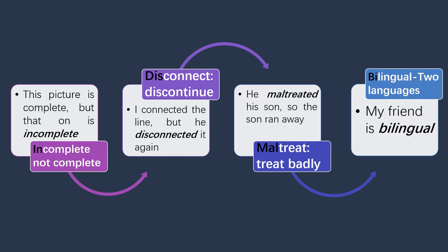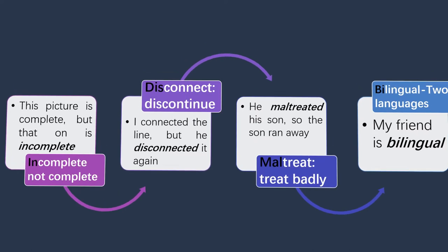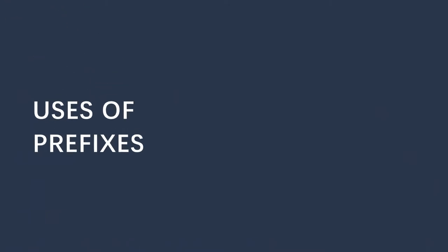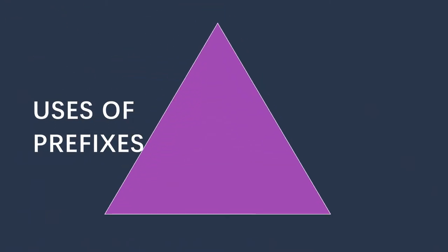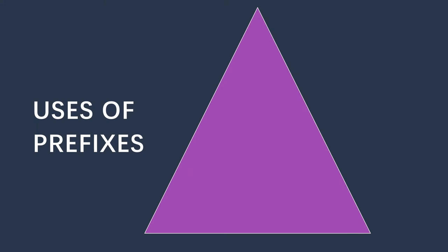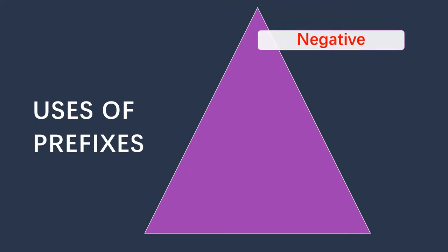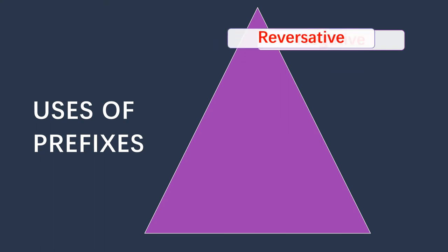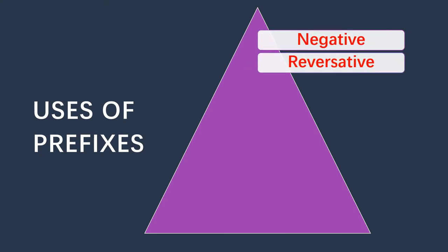There are many uses for prefixes, some of which are given in this slide. First, if you add a prefix to a word, you can get a negative meaning, or also a reversative meaning. Reversative means the reverse meaning of a word — for example, 'do' and 'undo,' so 'undo' is a reversative meaning of 'do.'